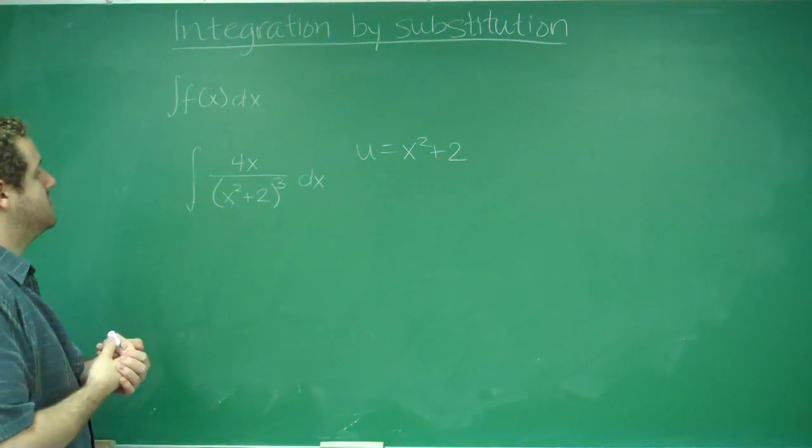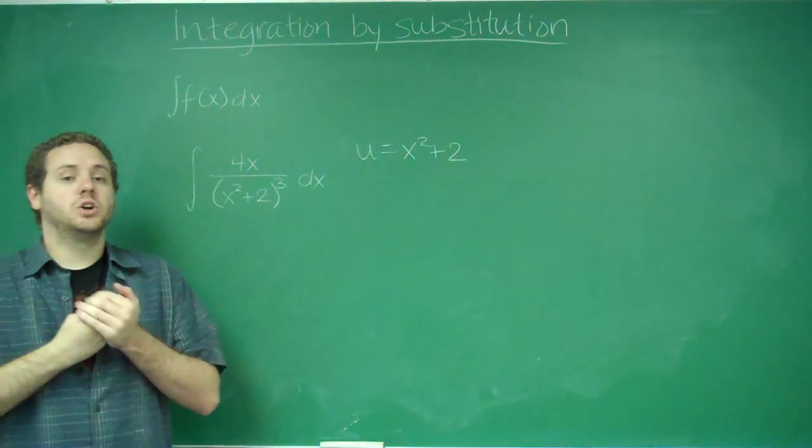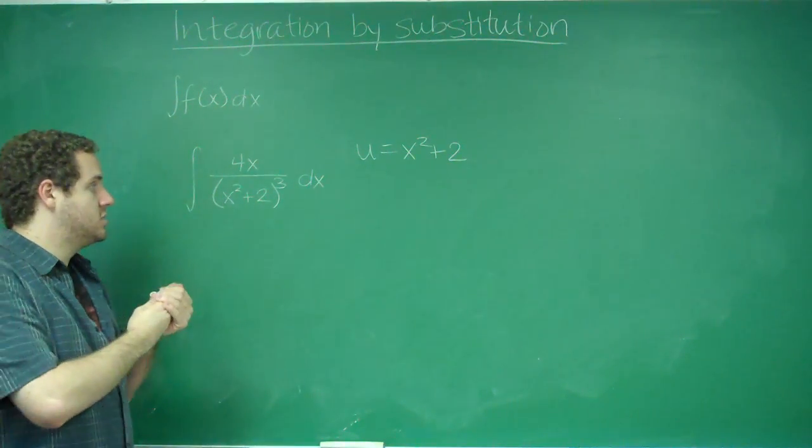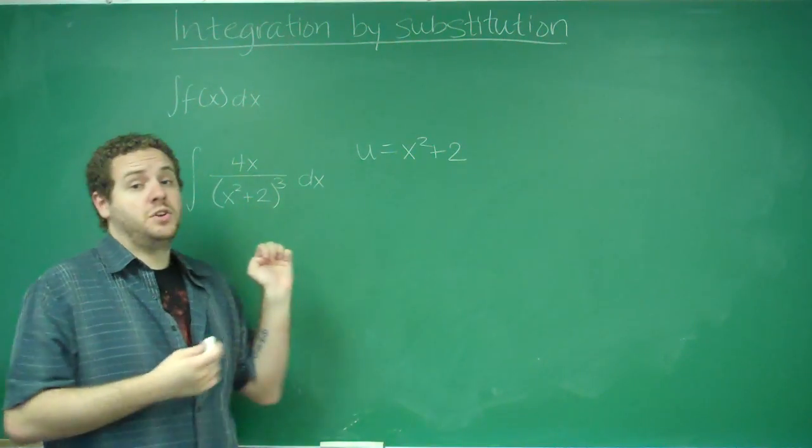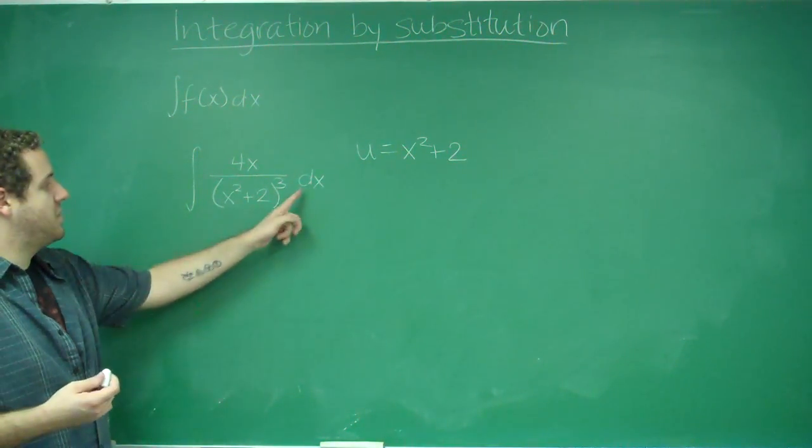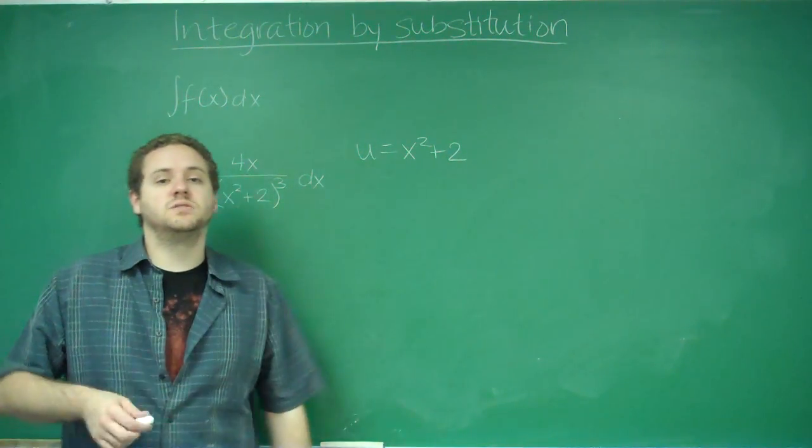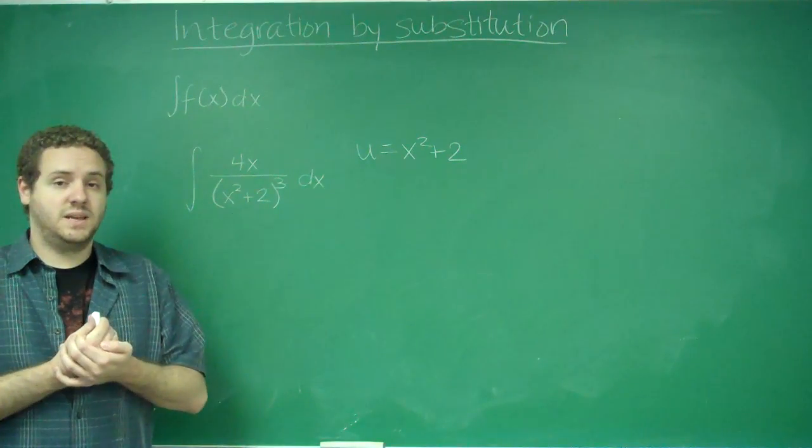What you need to do is now we want to transform this integral to be in terms of u instead of in terms of x. We can already get rid of this x squared plus 2 and just call it u, but we'd still be stuck with this 4x and this dx. Remember that the dx, in this case, tells you which variable you're integrating. So we want to change that to u instead of x.